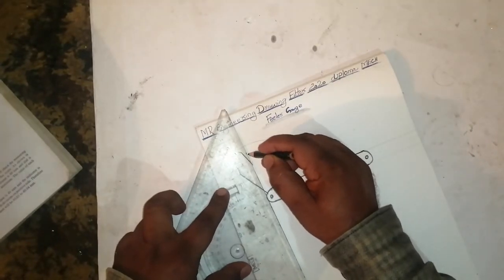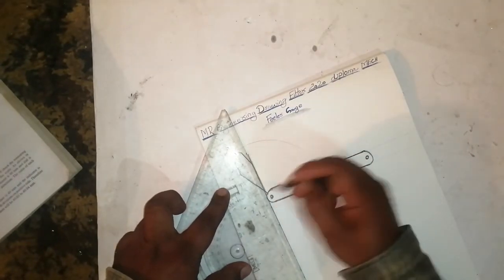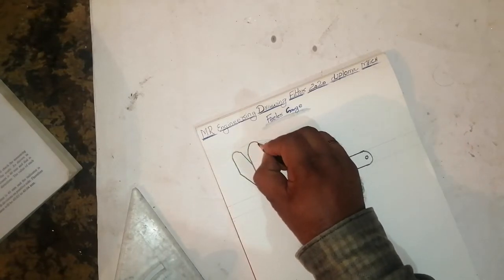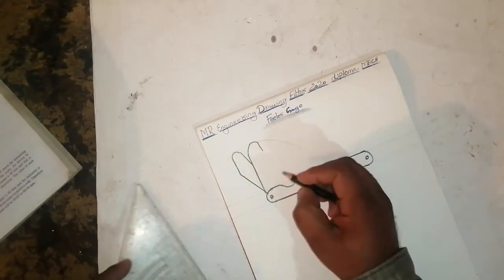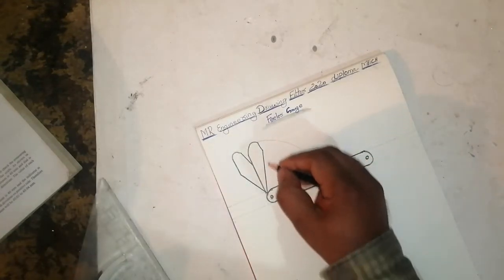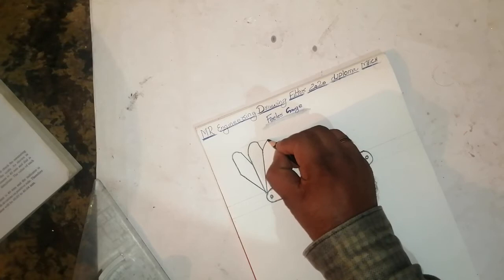This line like this. After that, draw one curved line and join this line. Keep on going like this.